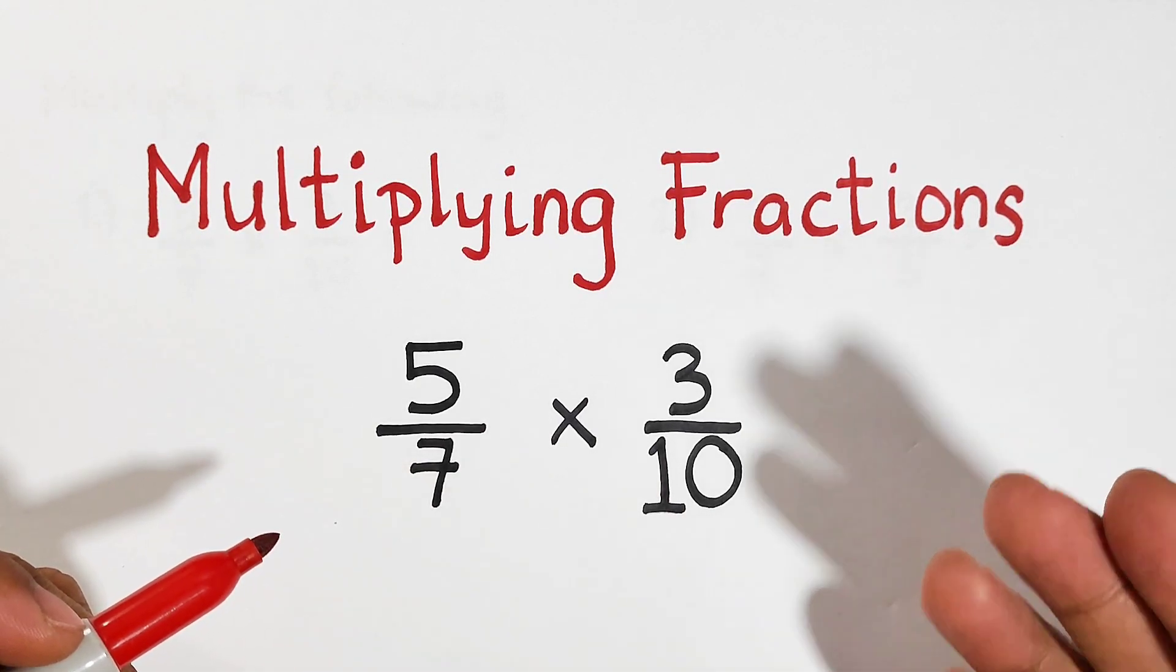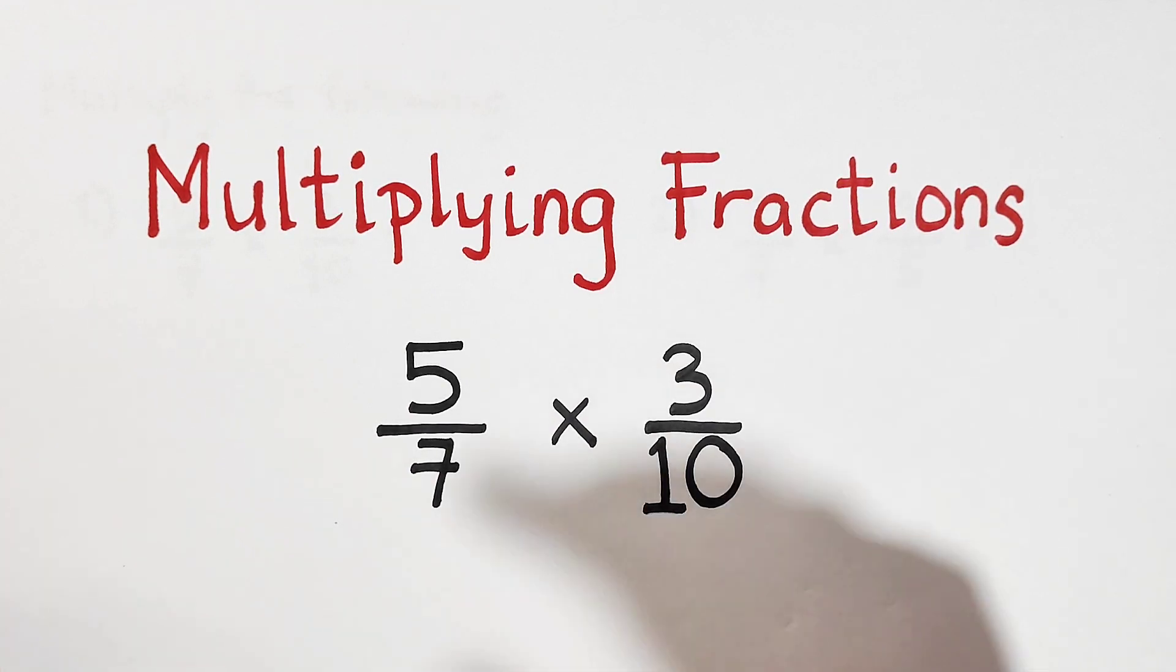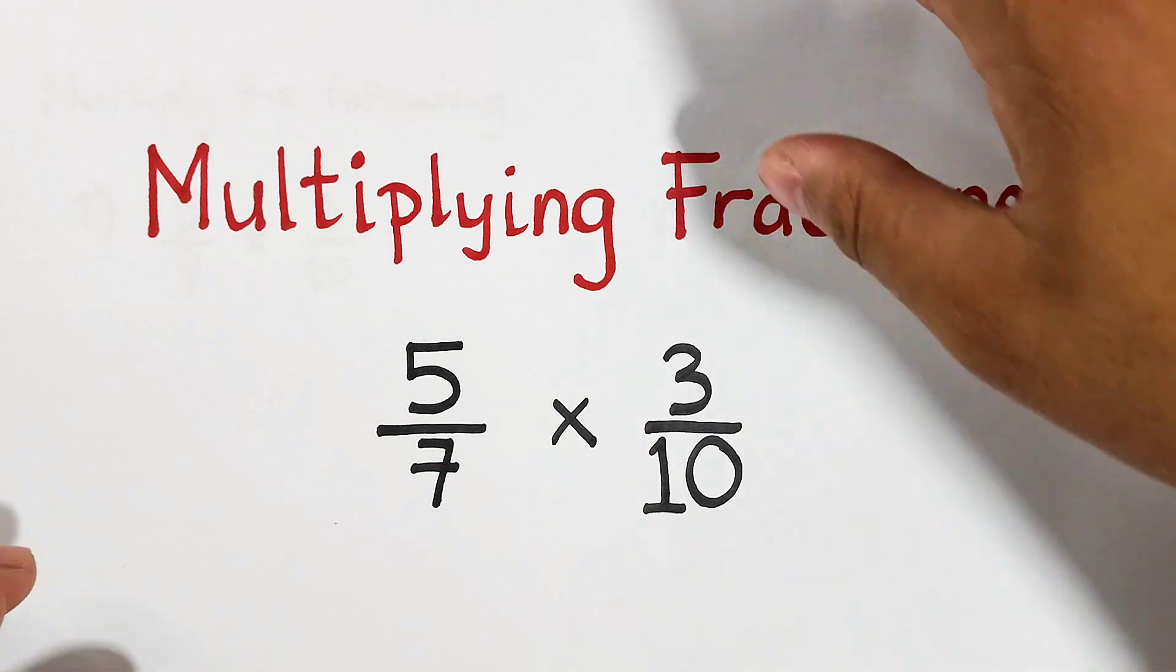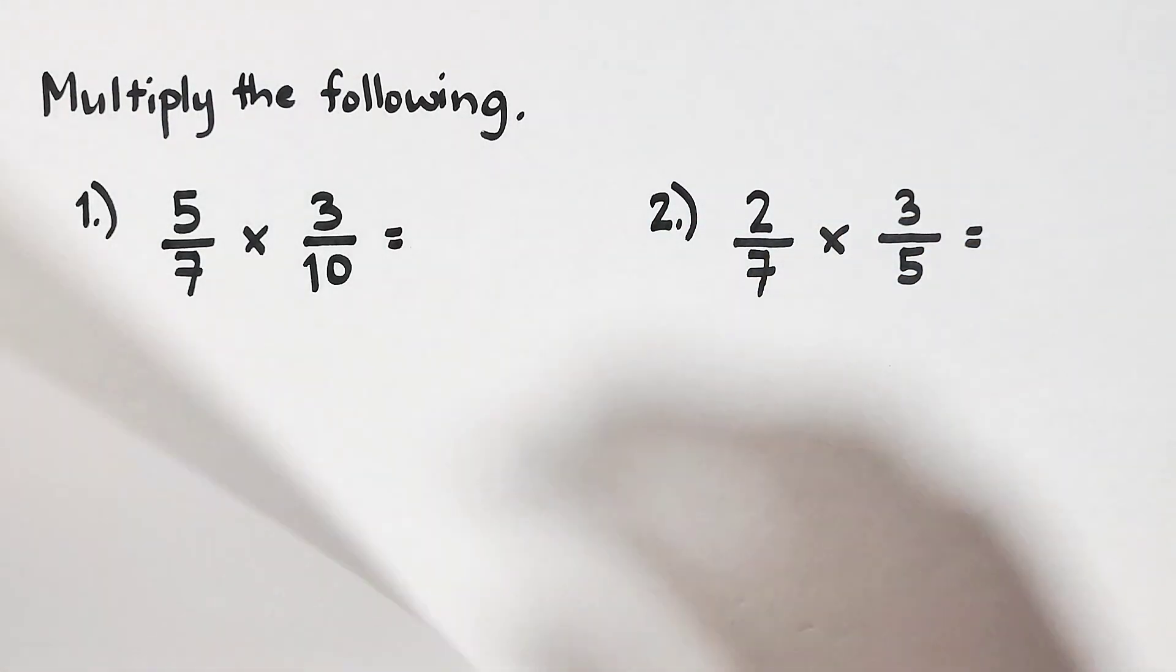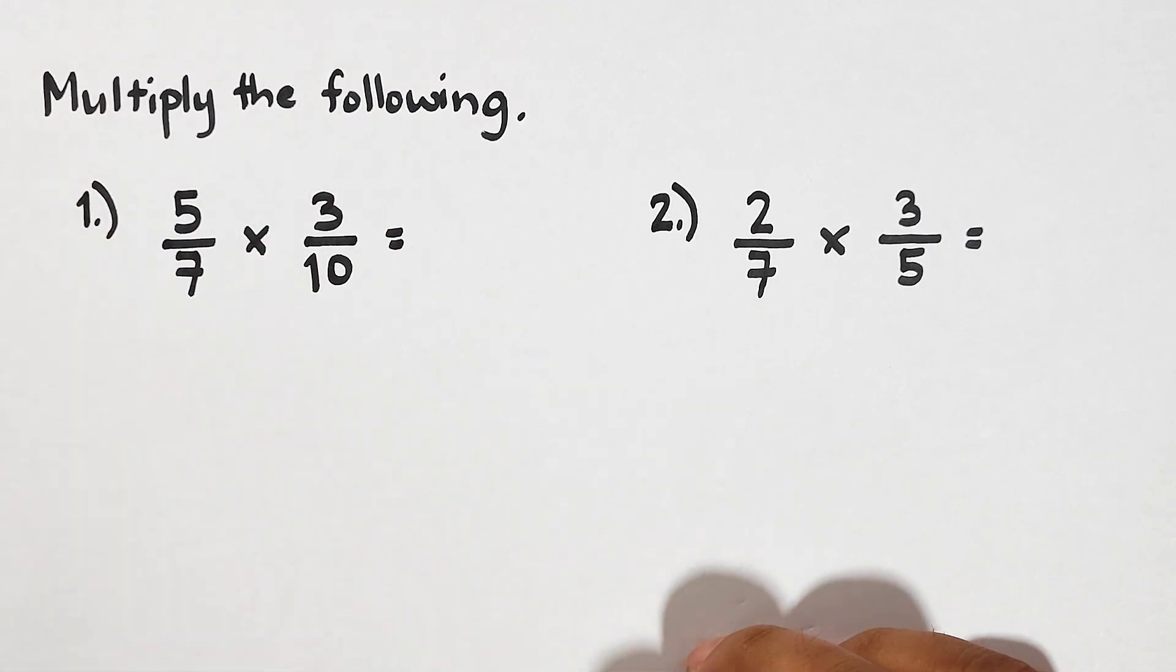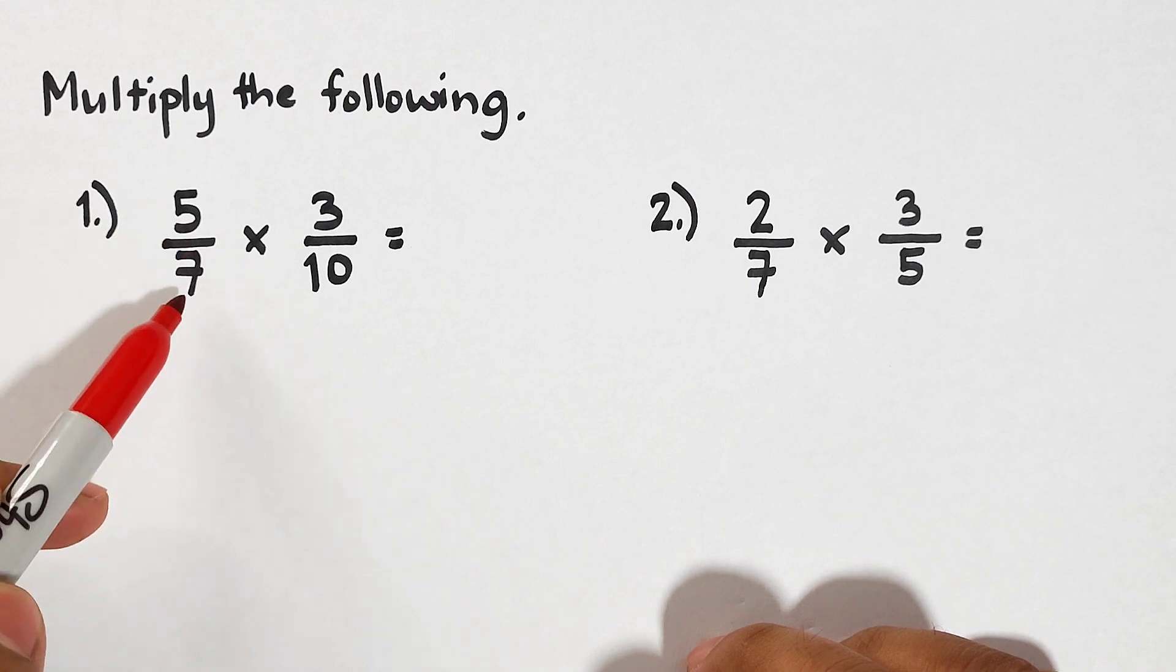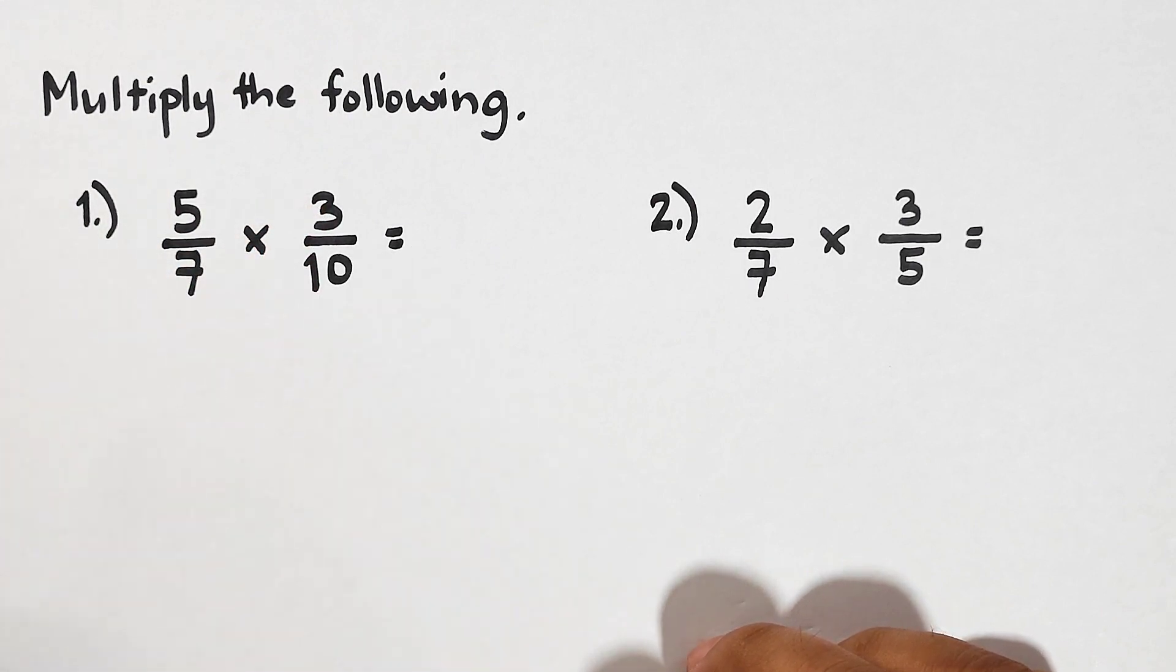A fraction by a mixed number, and a fraction by a whole number. So without further ado, let's do this topic. Let's have here the first two examples. We are asked to multiply the following fractions. In number one, we have 5/7 times 3/10.